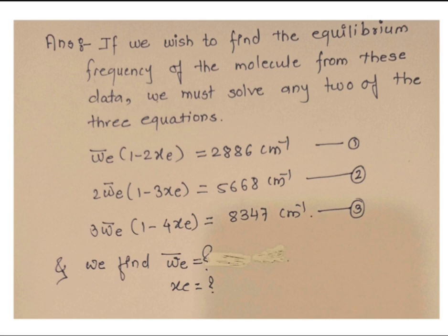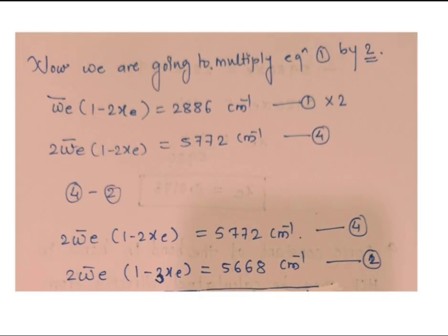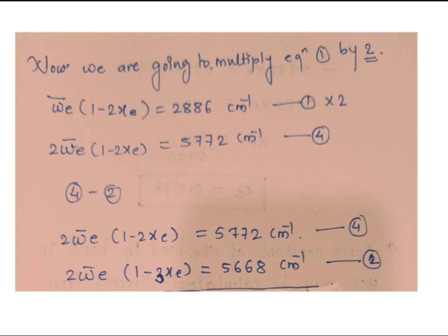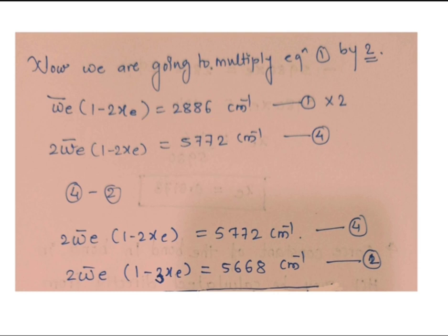To solve, multiply Equation 1 by 2 to get Equation 4: 2ω̄e(1 − 2xe) = 2886 × 2 = 5772 cm⁻¹. Expanding: 2ω̄e − 4ω̄exe = 5772 cm⁻¹. We now have Equations 1 through 4 ready for the next step.